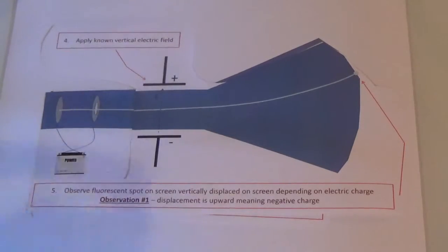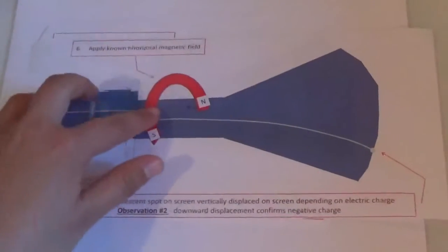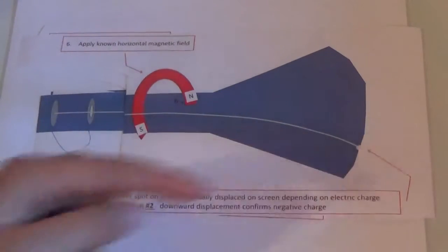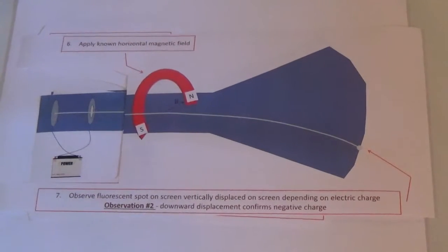If we apply a horizontal magnetic field, the ray moves downwards, confirming the negative charge.